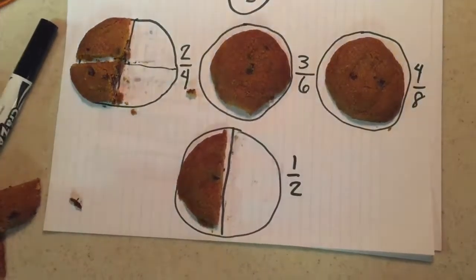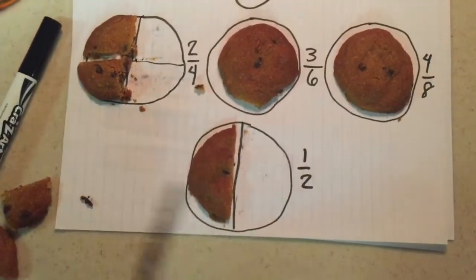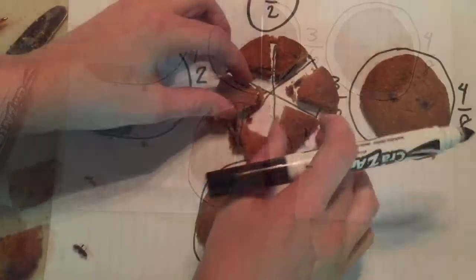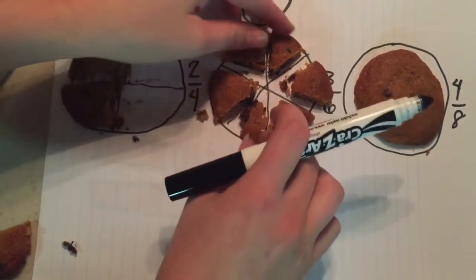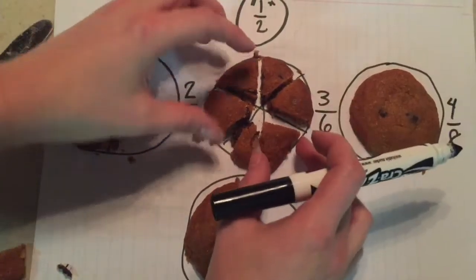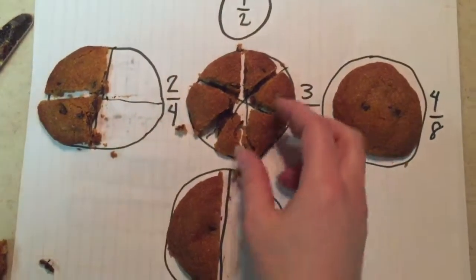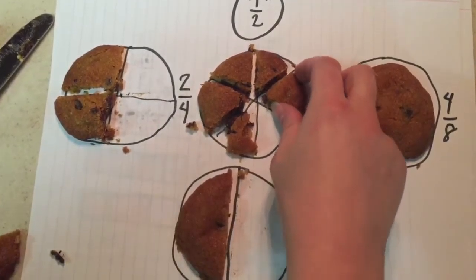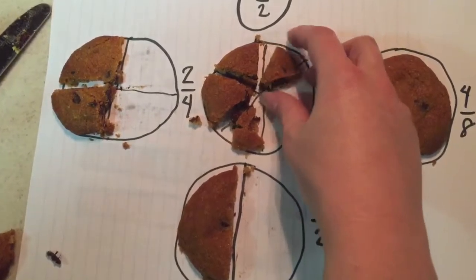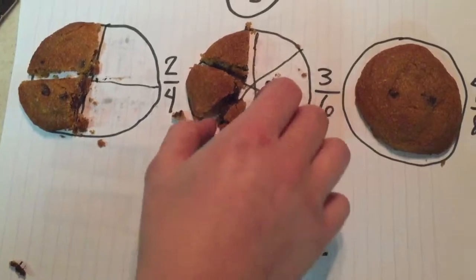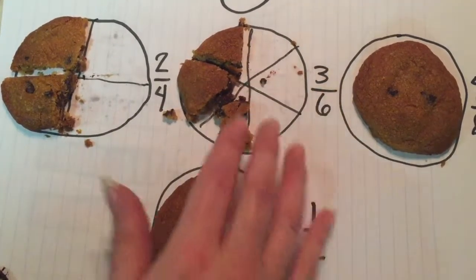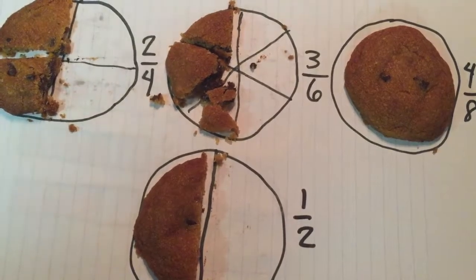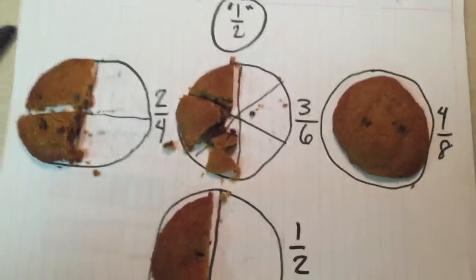So now, if I cut the cookie into six pieces, there are six pieces of cookie. And if I take away or eat three pieces—one, two, three—that leaves three-sixths, which is also equal to one-half.